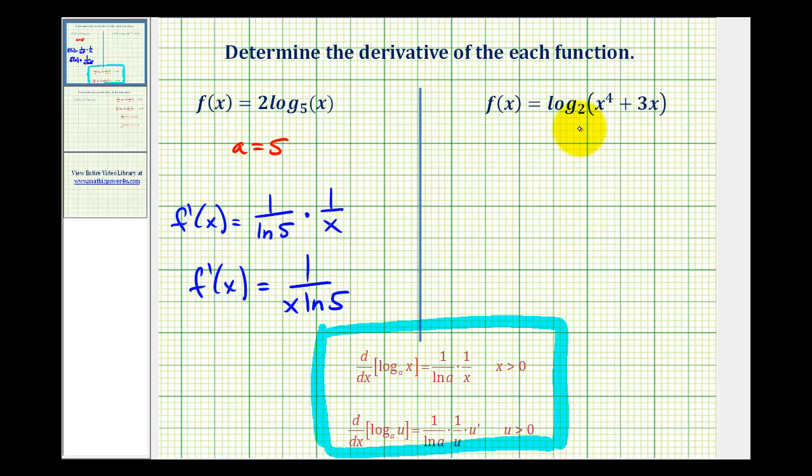For the second example, notice that we have log base 2, so a is equal to 2. And we do have a composite function, so we will let u equal x to the 4th plus 3x.